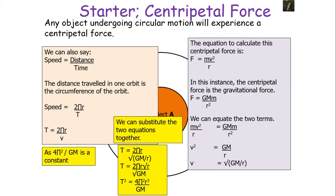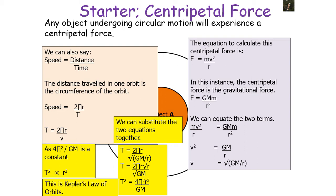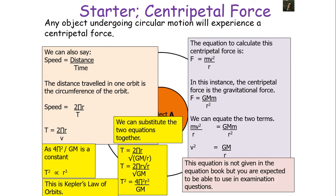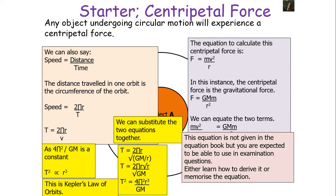This is very important: 4π²/GM is a constant, so we can say T² is directly proportional to r³, which is Kepler's law of orbits. Note that this equation T² = 4π²r³/GM is not given in your equation book, but you are expected to use it in examination questions. You must either derive it or memorise this equation linking time period and radius of orbit.